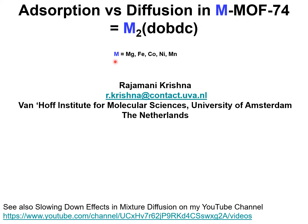MMOF74, where M can be magnesium, iron, cobalt, nickel or manganese, is an important metal organic framework that also goes under the name M2DOBDC.